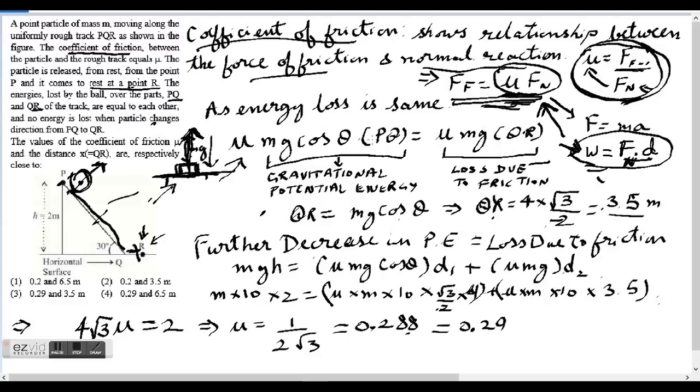So what we'll get is mu times mg cos theta PQ. So this is what we'll get: mu times mg times cos theta PQ is equal to mu times mg times QR.